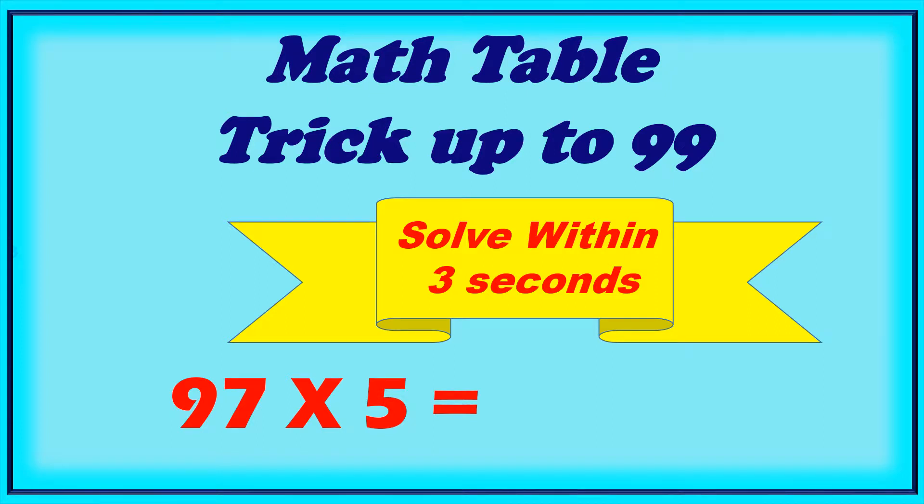Hi, in this video you will learn a math table trick up to 99. That means 1 to 99 tables you can easily calculate by multiplying within a short period - solving within 3 seconds. Let me try one example: 97 into 5.